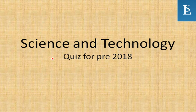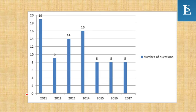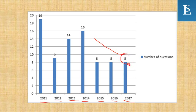Hello everyone and welcome. In this video I'm going to talk about science and technology objective questions — MCQs for prelims exam, designed for UPSC Civil Services Prelims 2018. Looking at last year analytics: 2011 had 19 questions from science and tech, 2012 had 9, 2013 had 14, 2014 had 16, 2015 had 8, 2016 had 8, and 2017 had 8. The weight of science and technology is going down but it's still a decent portion — about 8 questions are coming from this area, so it's definitely important. Let's check your knowledge.